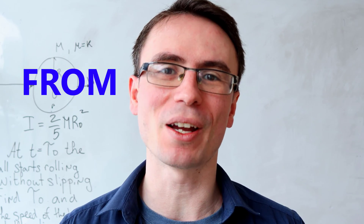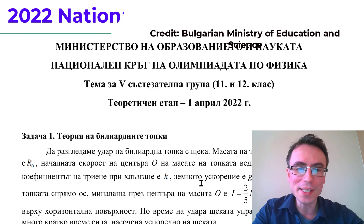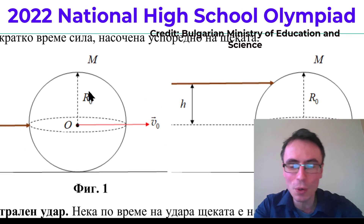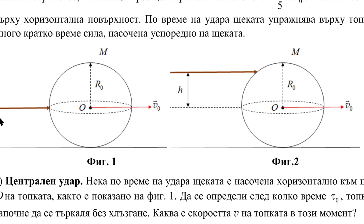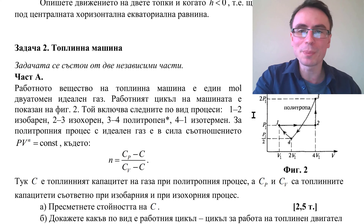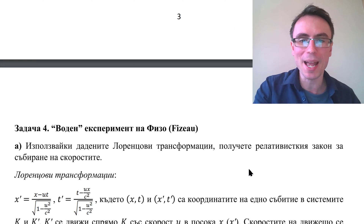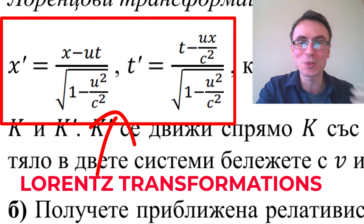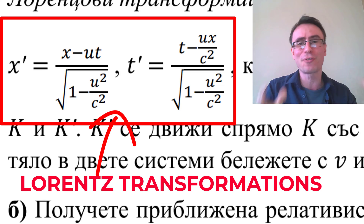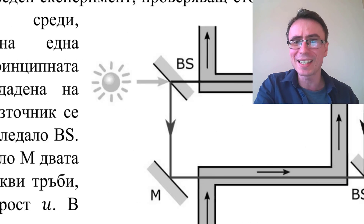Let's have a look at a physics olympiad from Bulgaria — a lot of you will know that's where I'm from. Question one is a tricky rotational physics problem involving the moment of inertia: the first part involves a horizontal strike and the second a strike at a height h. We also have some tricky thermodynamics, parallel plate capacitors, and the last question involves the Lorentz transformations to derive the velocity addition formula, applied to an interesting experiment with water.